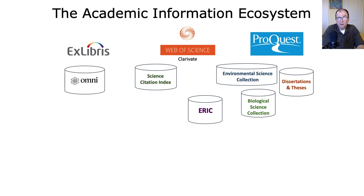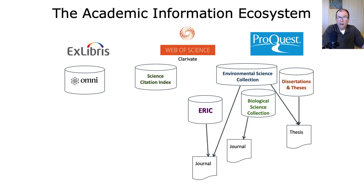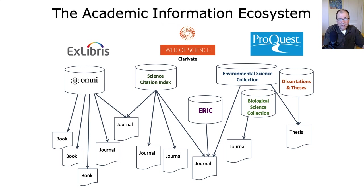Ex Libris produces a database that we've called Omni — what we in our profession refer to as a discovery layer. It's almost like a portal that sits on top of a whole bunch of different information within its own database. ProQuest provides access to journals and different content types like theses. Similarly, the Science Citation Index and Omni have their own journals, some of which are shared. Omni also contains different content types including media like video, audio, and government information.